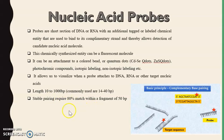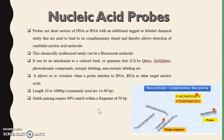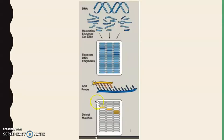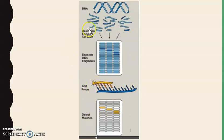There is a stable pairing required with 80 percent match within a fragment of 50 base pairs. Any kind of DNA can be digested with restriction enzymes, and these separated fragments can be identified with the help of a labeled probe. This is a generalized idea of the usage of nucleic acid probes.